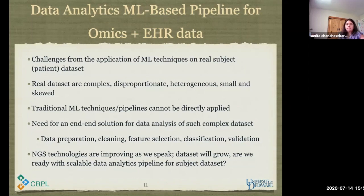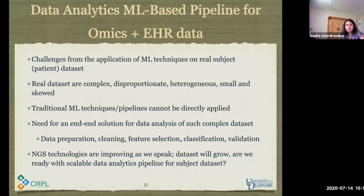Traditional machine learning pipelines like TPOT, for example, do not really work with real datasets. They give absurd ROC curves and we go back to square one. We need productive pipelines that have been bombarded with these real datasets and that incorporate a cluster of different cleaning, pre-processing, feature selection, and classification techniques that can work with certain types of real datasets. We cannot say that one pipeline will work for any real dataset because every patient is different — you're going to have different types. But at least you can prepare some pipelines for certain types of disease datasets from hospitals. To the best of my knowledge, there is no such end-to-end pipeline that exists today, and that is slowing down the progress we can make with real science datasets.